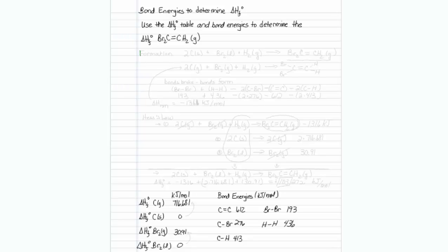First, let us write exactly what a formation reaction is. A formation reaction is the formation of one mole of material from elements in their standard state. So I will need carbon to make this material. I will need two moles of carbon as a solid.